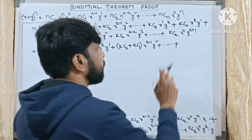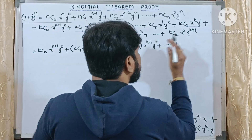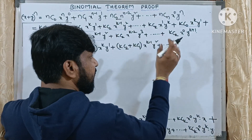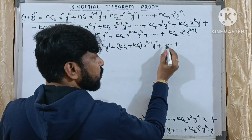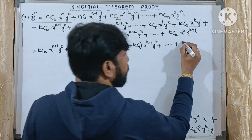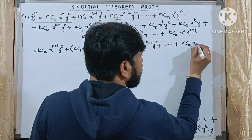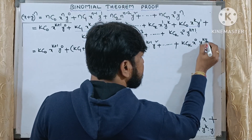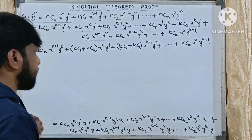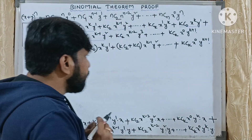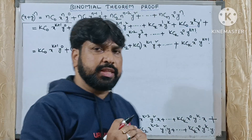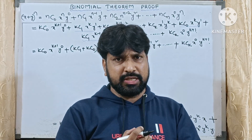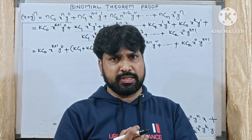The last term is kCk·x^0·y^(k+1). Now to simplify further, you need to know some rules from permutations and combinations.